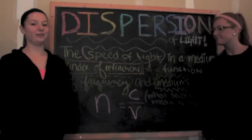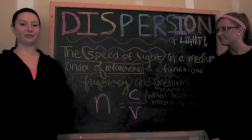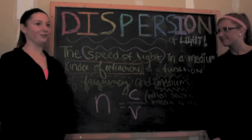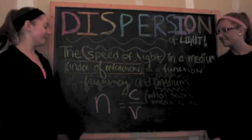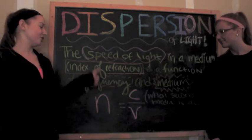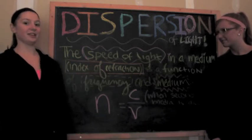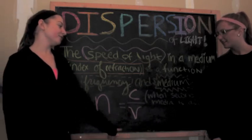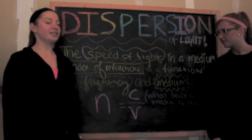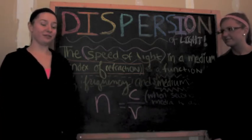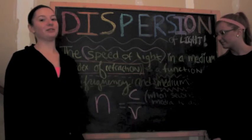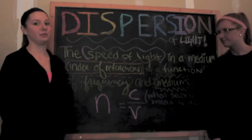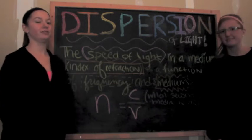If you want to find the index of refraction using an equation, you can set it up as n — which is the index of refraction — equals c over v, where c is the speed of light through a vacuum and v is the speed of light going through the medium it's traveling through.